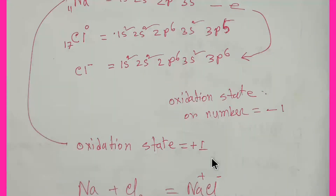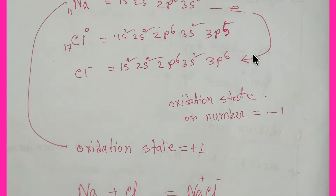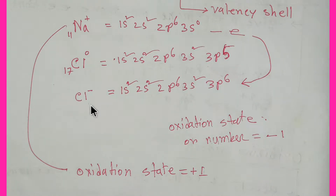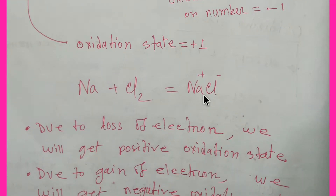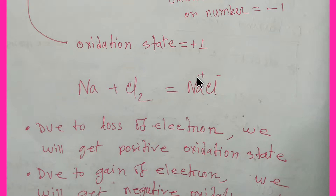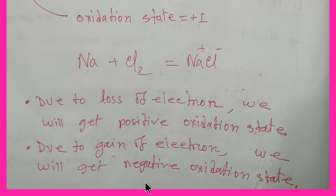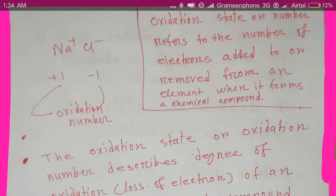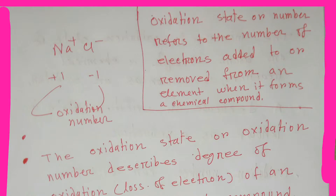So the oxidation state of sodium is plus one and the oxidation state of chlorine is negative one. Due to loss of electron, sodium gets a positive oxidation state, and due to gain of electron, chlorine gets a negative oxidation state.